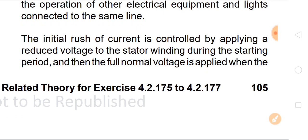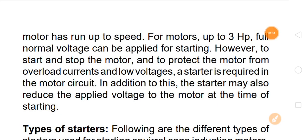The inrush of current is controlled by applying a reduced voltage to the stator windings during the starting period, and then the full normal voltage is applied when the motor has come up to speed. For example, up to 3 HP, full normal voltage can be applied for starting. However, to start and stop the motor and to protect the motor from overload current and low voltage, a starter is required in the motor circuit. In addition, the starter may also reduce the applied voltage to the motor at the time of starting.